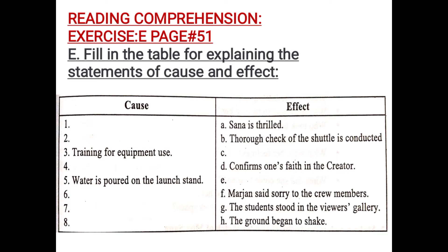Just like that, at number two, again the cause is not given but the result is given — that a thorough check of the shuttle is conducted. The space shuttle is checked very carefully; every detail is checked again and again to make sure there is no mistake before it is launched into space. So, you have to write the reason why this thorough checking is conducted before the launch.